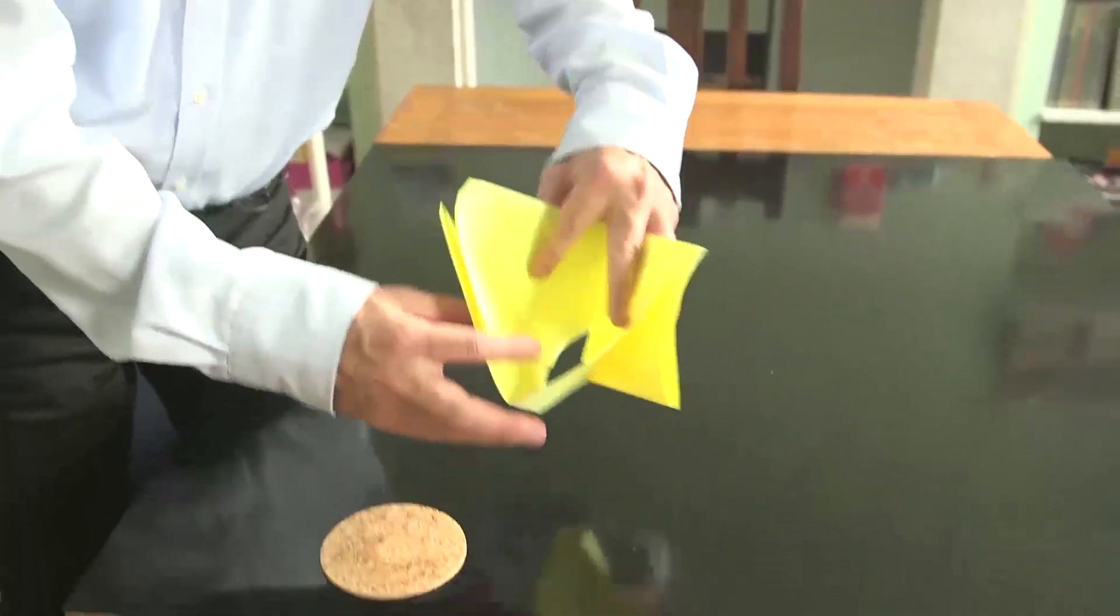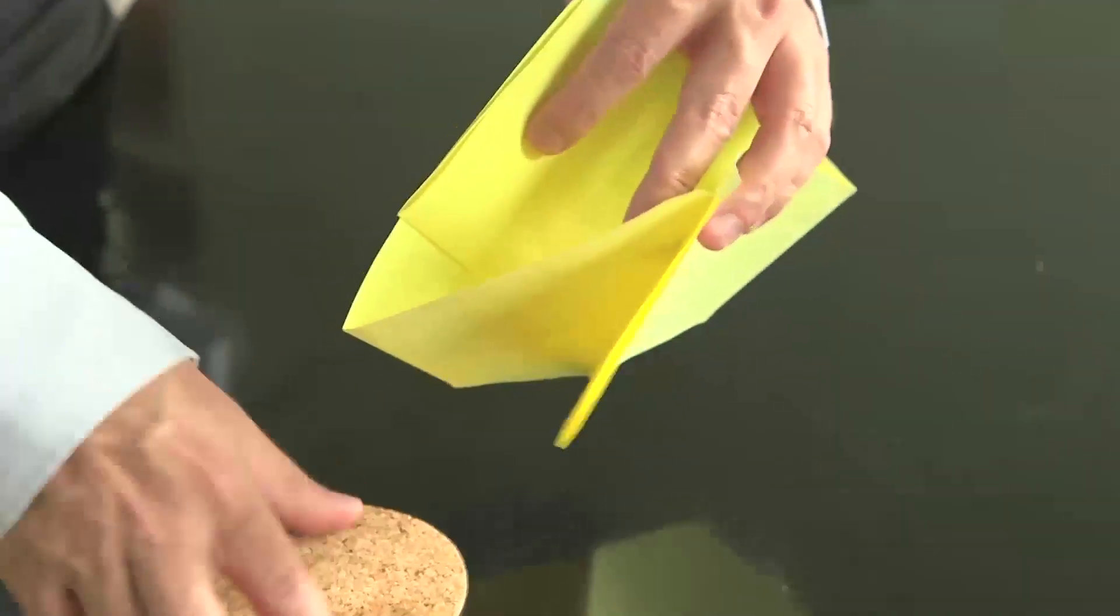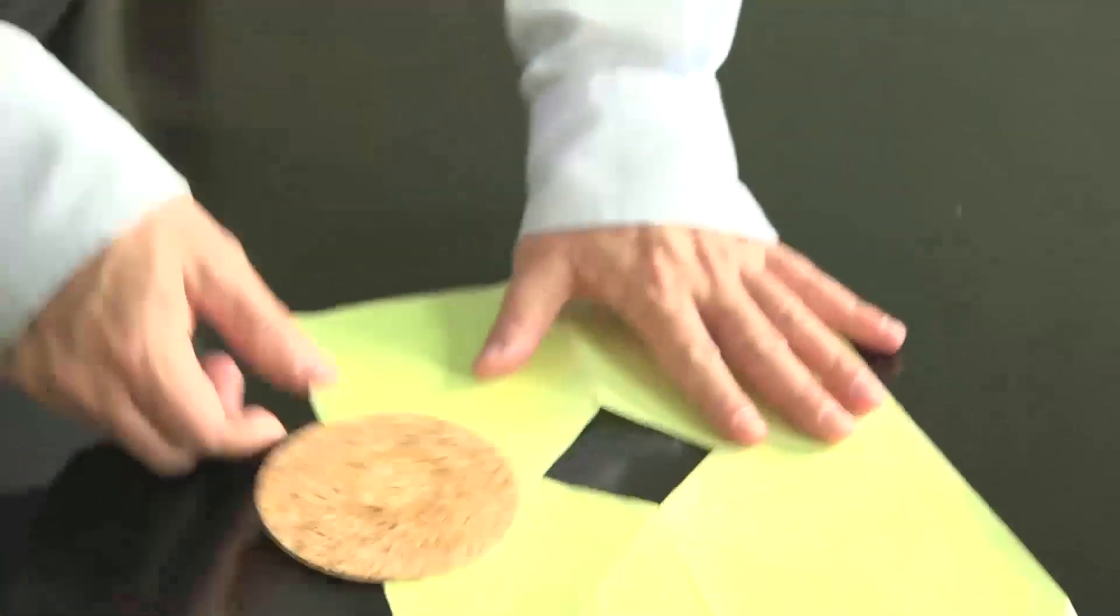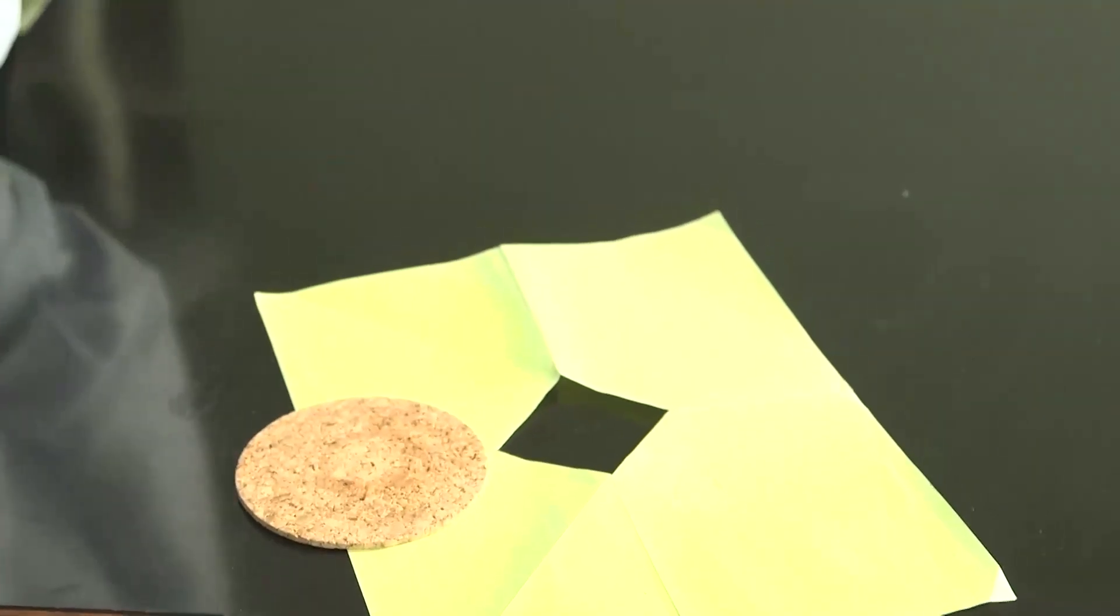I didn't stretch, let alone tear. And yet when I fold the sheet back in a judicious way, the coaster does go through even though it's bigger than the hole. How is this possible?